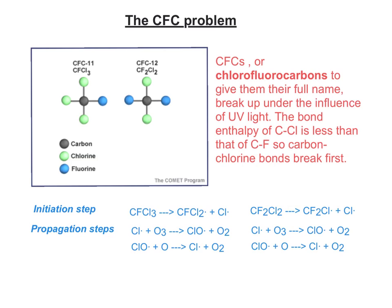That chlorine radical goes on to attack ozone. It reacts with ozone and produces ClO• plus O2. The same propagation step takes place no matter what the actual chlorofluorocarbon. The problem is that all chlorofluorocarbons, no matter their formula, if they have carbon-chlorine bonds, those break up to produce Cl radicals. And if you look at the Cl radical at the start and at the end, you can see it is regenerated.